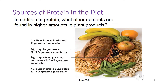Plant sources of protein provide most, but not all, B vitamins and also supply iron, zinc, and calcium, but in less absorbable forms. Plant foods are generally excellent sources of fiber, phytochemicals, and unsaturated fats — nutrients that should be increased in our diets to promote health.